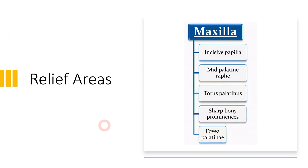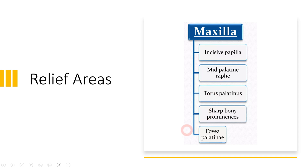Moving on towards relief areas. Relief areas in maxilla consist of incisive papilla, mid-palatal raphe, torus palatinus, any sharp bony prominence, and fovea palatinae. Relief areas are those areas which should be given space in the maxillary denture so that the denture does not press against these structures, because if it does, there will be difficulty in retention and support. We have to provide relief when taking impression in these areas, or even surgically reduce some of these areas so that we can have a proper base on which the denture seats.